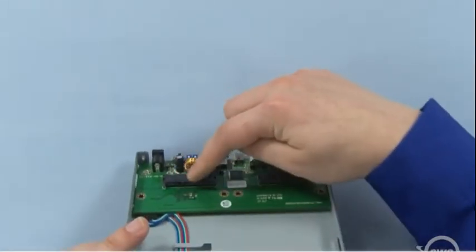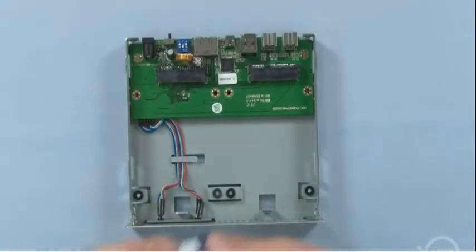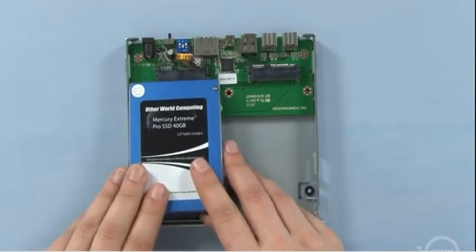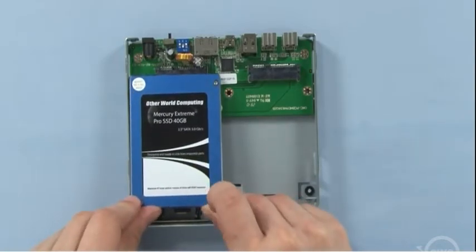On the bridge board, you'll see a pair of SATA ports. These correspond to the SATA connectors on the drives. Slide each drive into place, making sure that the connectors are firmly attached.